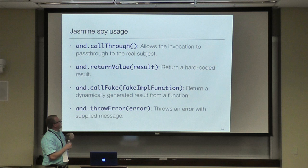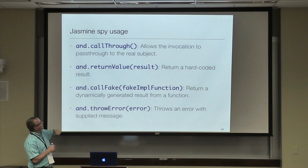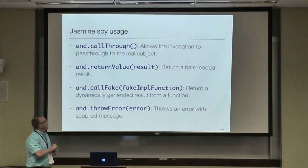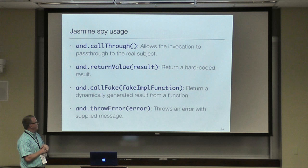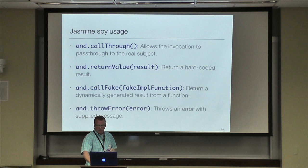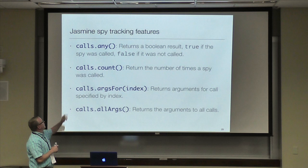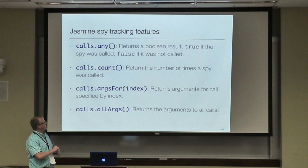Here are the new spy call configurations in Jasmine 2.0: `and.callThrough` basically uses the spy but lets it call through to the real subject instead of using it as a mock or stub. `and.returnValue` returns a hard-coded value. `and.callFake` generates a result from a function. And you can also `and.throwError`, which is nice if you're trying to test alternative pathways. The new tracking features include `calls.any()` giving a boolean result, `calls.count()` for how many times the spy was called, and `calls.argsFor()` to get arguments for a specific call.